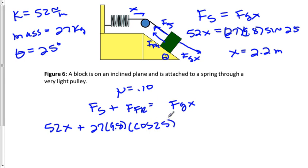Now we need to multiply that by mu, 0.10. That will equal mg sine theta. So 27 times 9.8 times the sine of 25.